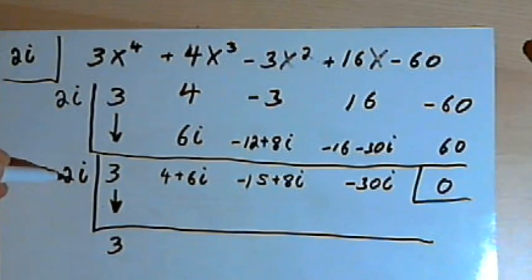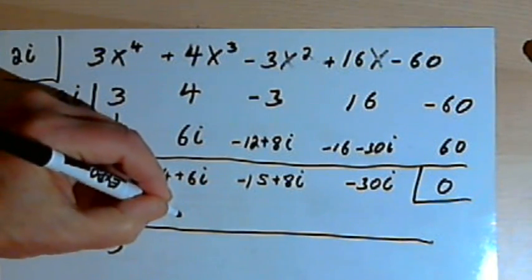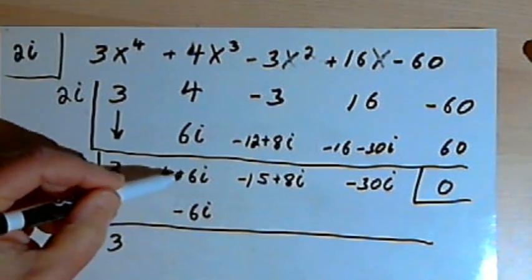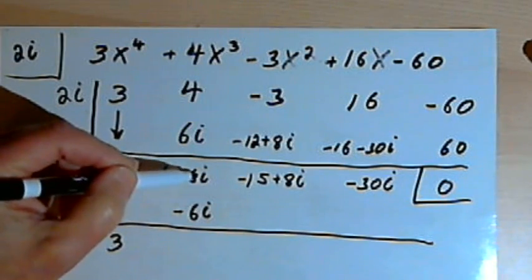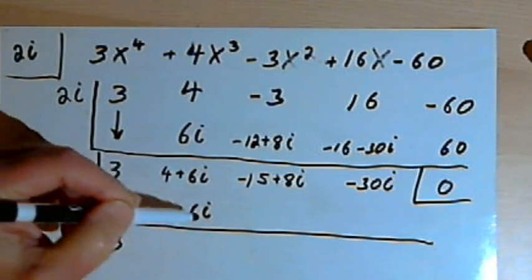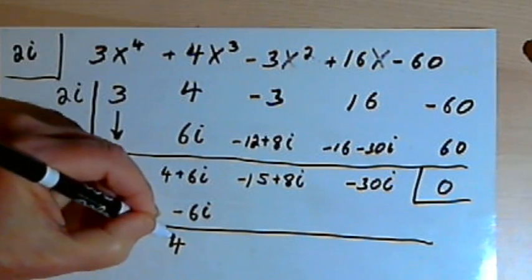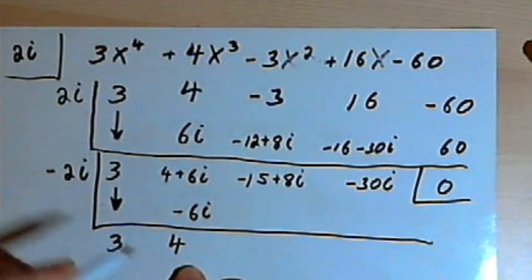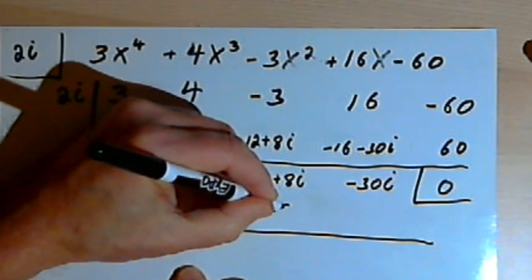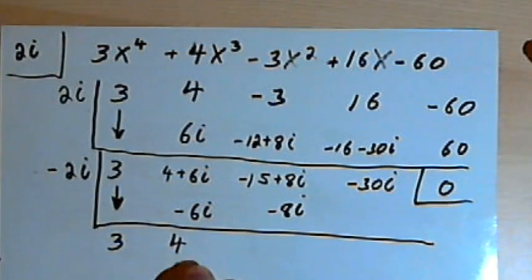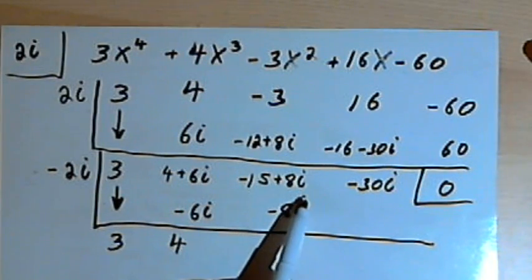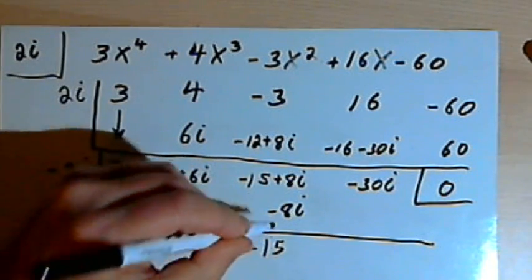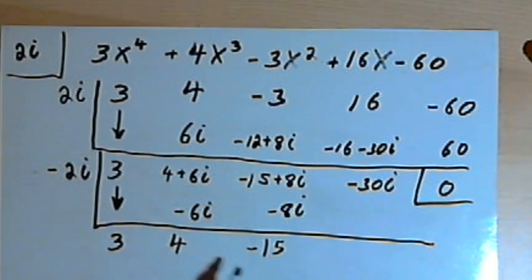Multiply 3 times negative 2i. That's going to be negative 6i. I'm adding that to 4 plus 6i. The imaginary parts, the 6i and the negative 6i, will cancel, and I end up with just a 4. I multiply negative 2i times 4 is negative 8i. I add that to negative 15 plus 8i, and I get just a negative 15. You see that all those imaginary parts are canceling out as we go along.